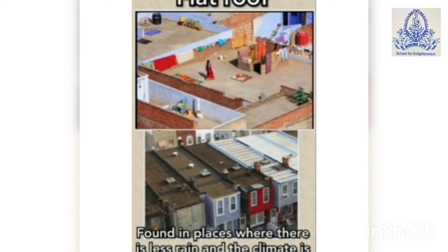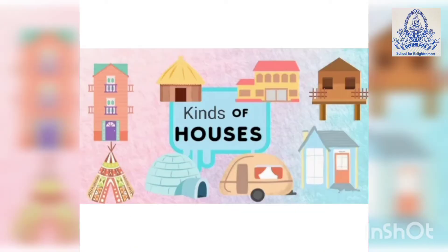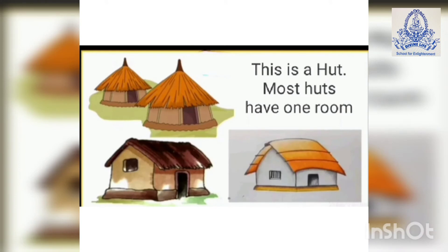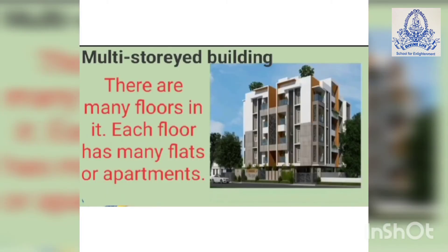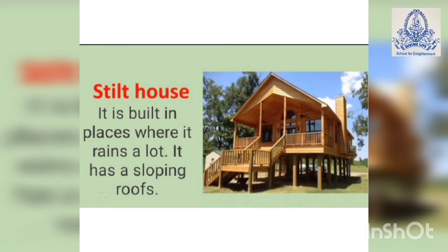Flat roofs are found in places where there is less rain and the climate is hot and dry. Kinds of houses: This is a hut — most huts have one room. Bungalow — it has many rooms, and some bungalows have a garden. Multi-storey building — there are many floors in it, and each floor has many flats or apartments.